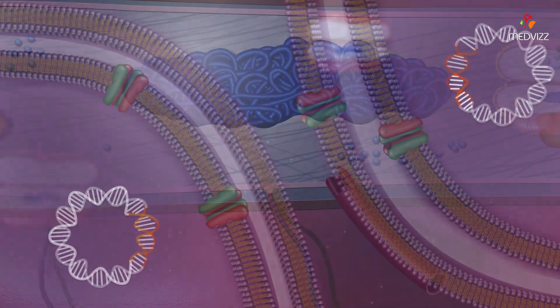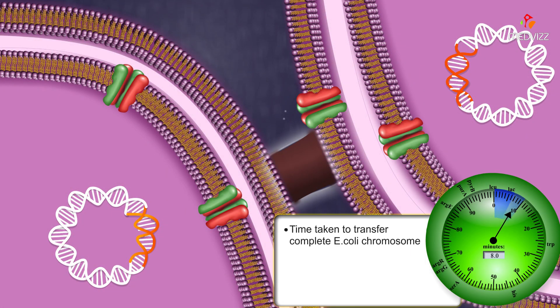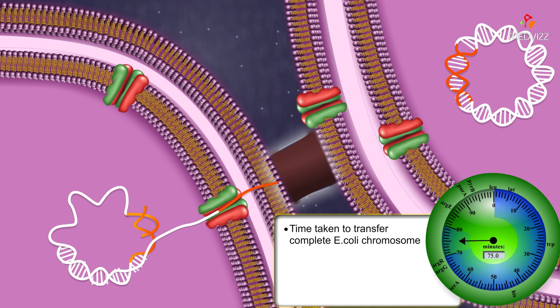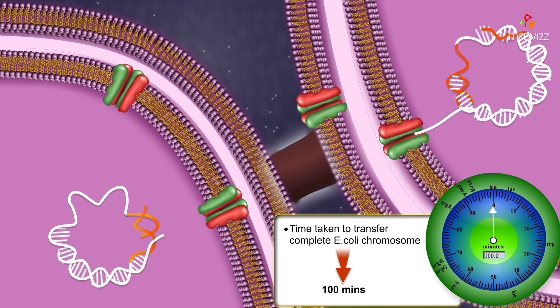The circular genome of E. coli can be mapped by allowing HFR conjugation to occur for set amounts of time. It takes about 100 minutes to transfer a complete E. coli chromosome.